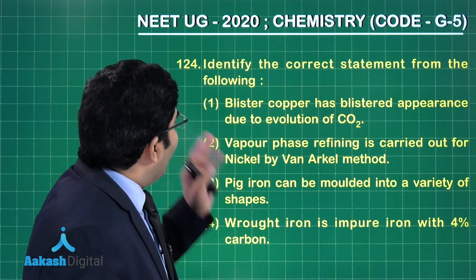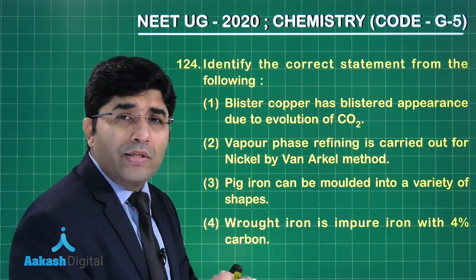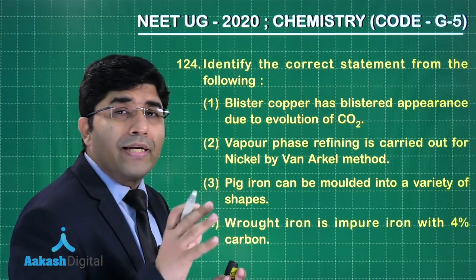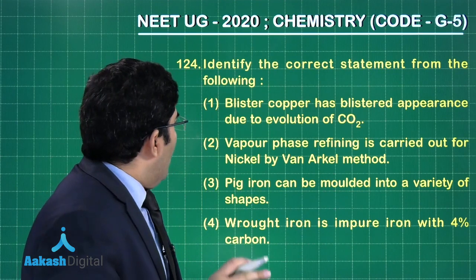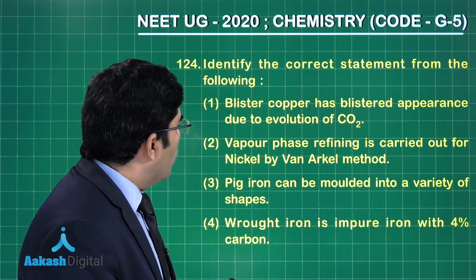Now in this question we need to identify the correct statement from the following. Four statements are given to us and we have to find out the correct statement. First is blister copper has blistered appearance due to evolution of CO2, absolutely wrong.